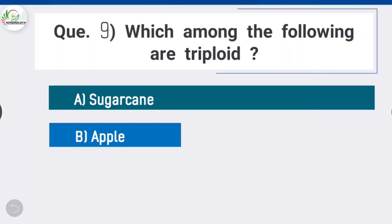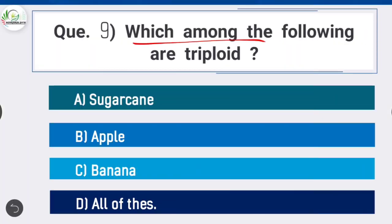Question 9: Which among the following are triploid? Option D is correct: all of these — sugarcane, apple, and banana are all triploid. Triploids have three sets of chromosomes. Triploids are useful only in those plant species which propagate in an asexual manner, like banana, apple, and sugarcane.